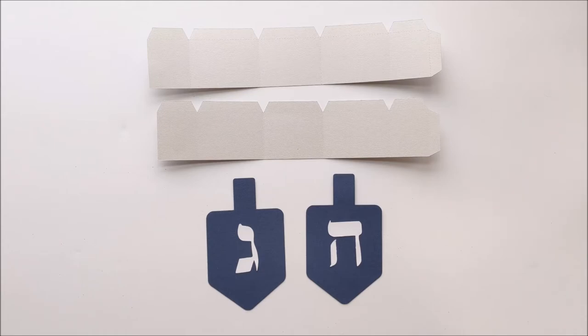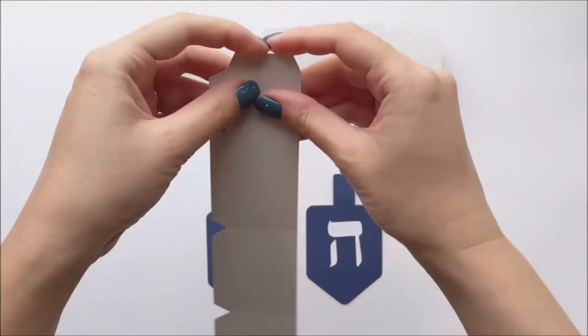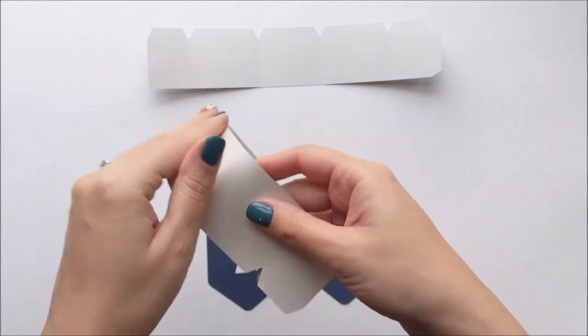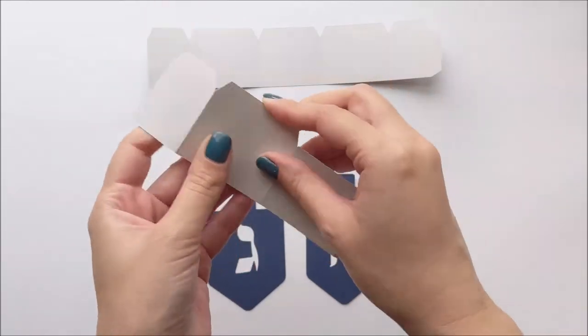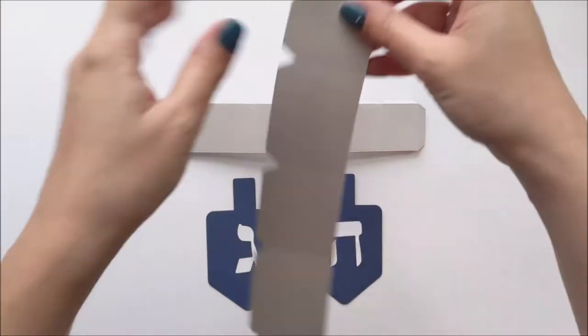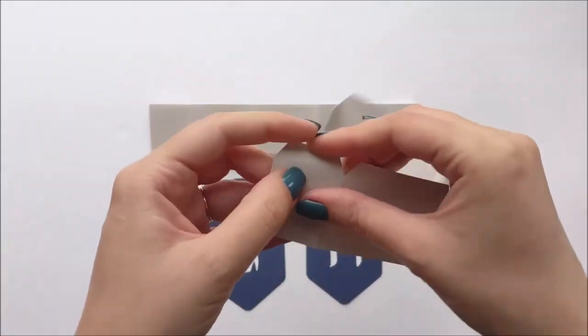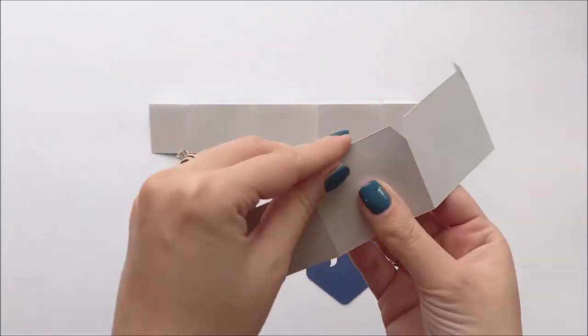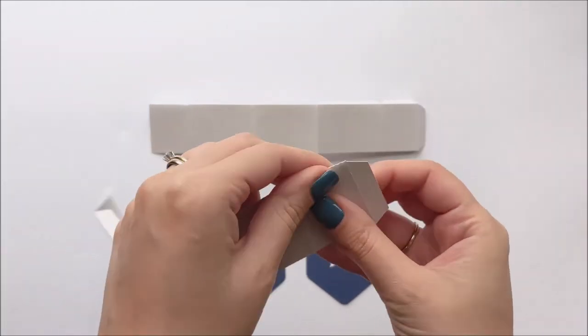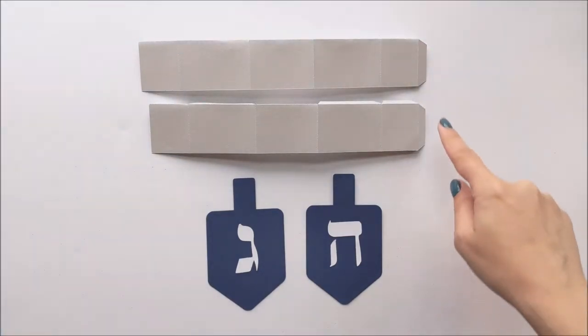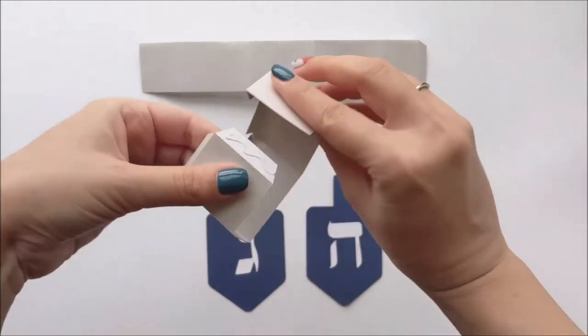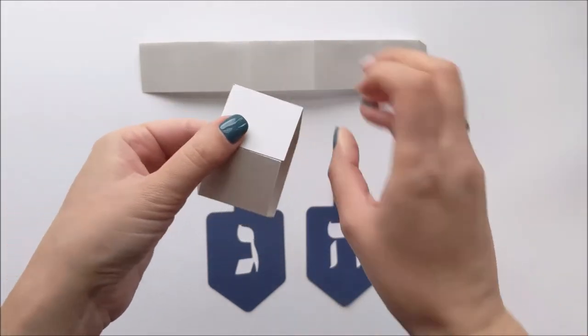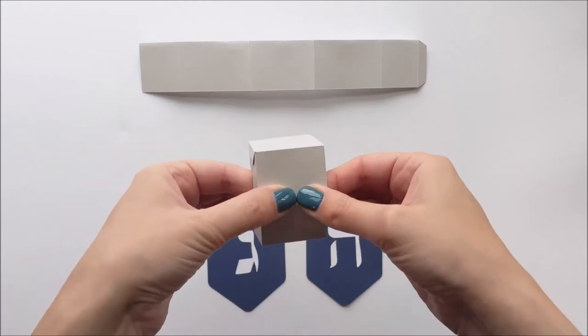Next, you're gonna pre-fold your box pieces along the score lines. For each of the box pieces, you're then gonna glue along these side tabs, and then you're gonna bring that around to the other side to glue those together. And just hold that there until the glue dries.